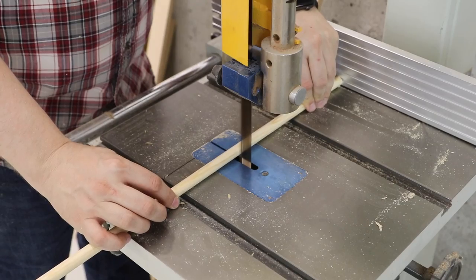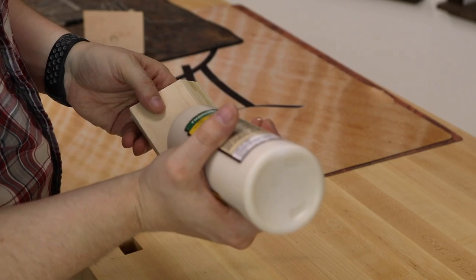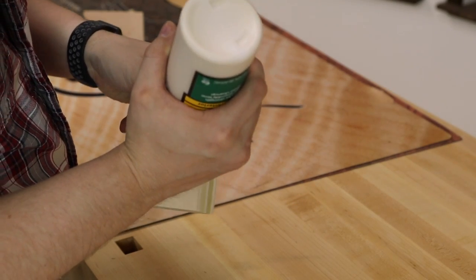And then at the bandsaw I cut my dowel stock and put a little dab of glue into the hole for each one of these.